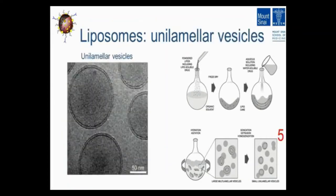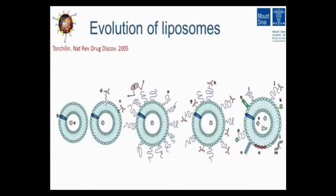What you end up with is nice unilamellar vesicles of uniform size. I should also educate you about the famous people in this field. Vladimir Torchelin wrote a very nice review that I recommend. I really like the evolution of liposome technology: in the 60s liposomes were discovered as simple bilayered vesicles. People knew they could include hydrophilic agents inside the aqueous lumen. Then PEGylation was introduced along with the attachment of targeting ligands — Terry Allen from Canada is also known for this PEGylation technology.